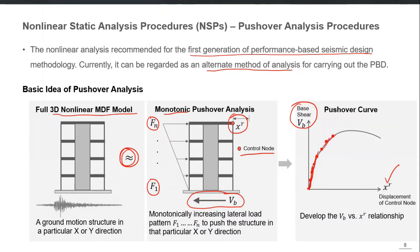As components start getting inelastic actions — cracking or yielding — the curve deviates from a straight line. There comes a point when the structure is significantly damaged, reaching a peak beyond which it starts losing capacity. The curve may go down, and the structure may ultimately fail. This curve is called the pushover curve. It tells us at what loading level what was the displacement of the control node (roof displacement), and the base shear Vb is the sum of all the applied loading.